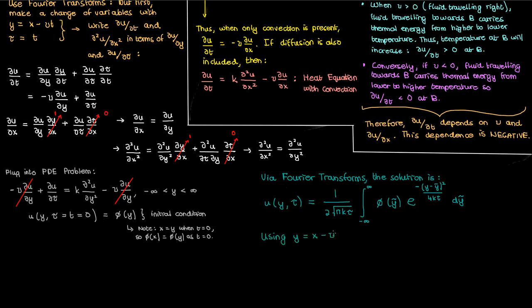And finally if I replace my y with x minus vt and tau by t this is the solution to my heat equation with convection for an infinite spatial domain and arbitrary initial condition. And this is your full solution.